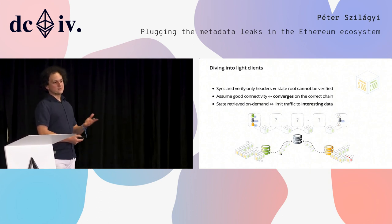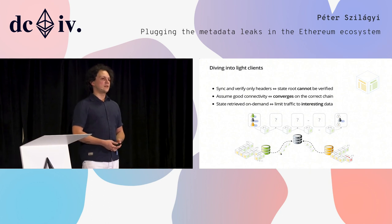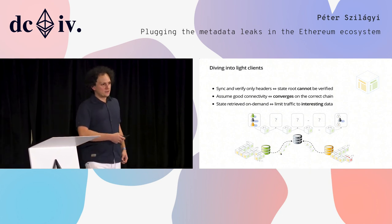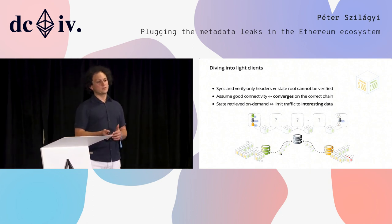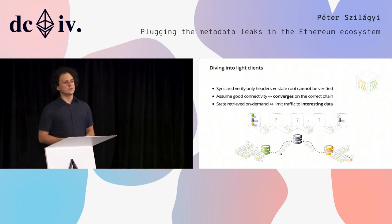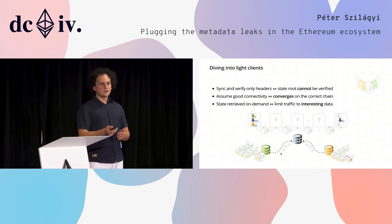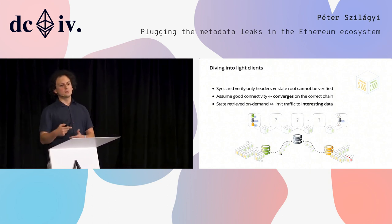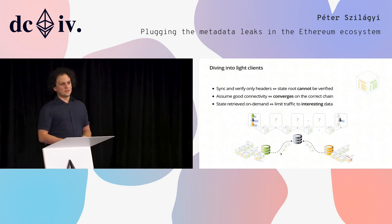Two more things about how light clients work. They are obviously synchronizing headers and then retrieving data on demand — only interesting data. Another really interesting aspect, which apart from protocol developers most people are unaware of, is that light clients cannot verify the state. They are verifying the proof of work, but they blindly trust that the associated state is valid. This works because if you have good connectivity to the network and many people sending you blocks, it's really hard for somebody to forge a block — the rest of the network won't accept it, so after a few more blocks it will just get reorg'd out of your chain.